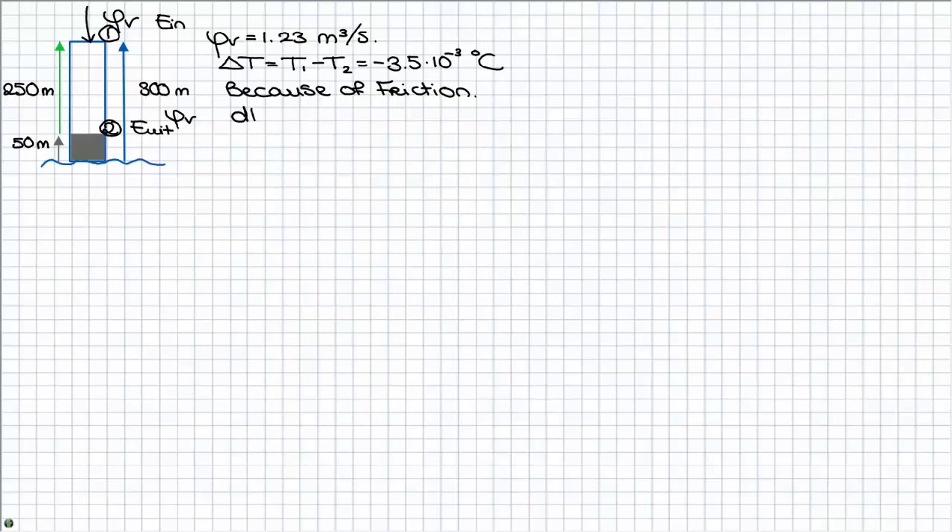We can now set up a mass balance. Because the density of water is constant you can transform the mass balance to a volume balance which makes it easier for us because we only have a volume flow. If you fill in the balance you have to notice that the flow in is the same as the flow out of the pipeline which is logical.